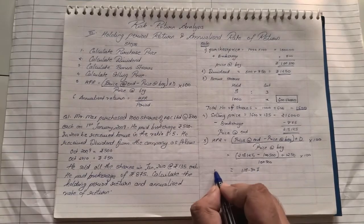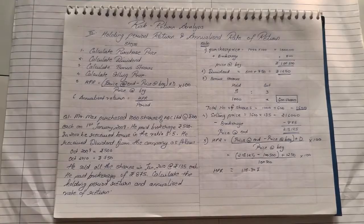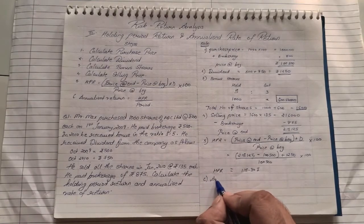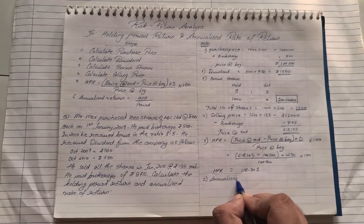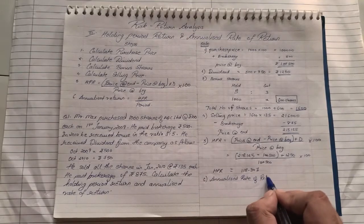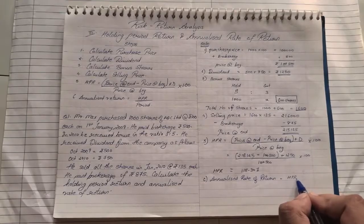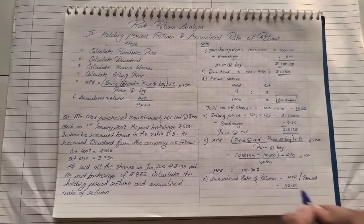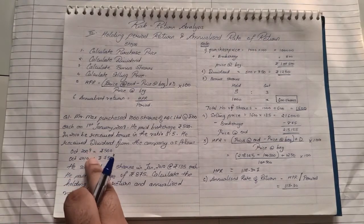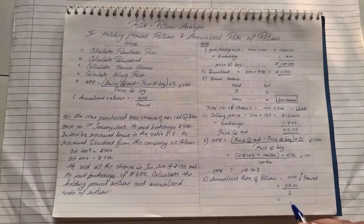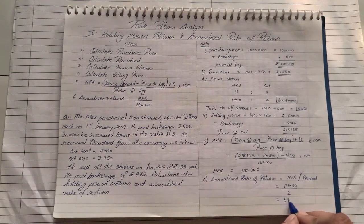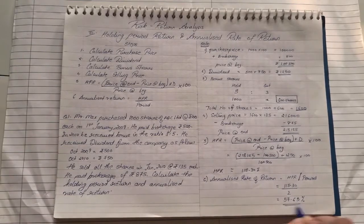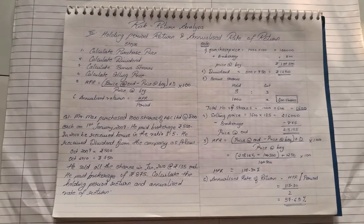Step six: find the annualized rate of return. The annualized rate of return = HPR / holding period (in years). Dividend was received for 2009 and 2010, so the holding period is 2 years. Annualized rate of return = 115.30 / 2 = 57.65%. The sum based on holding period return and annualized rate of return is now complete.